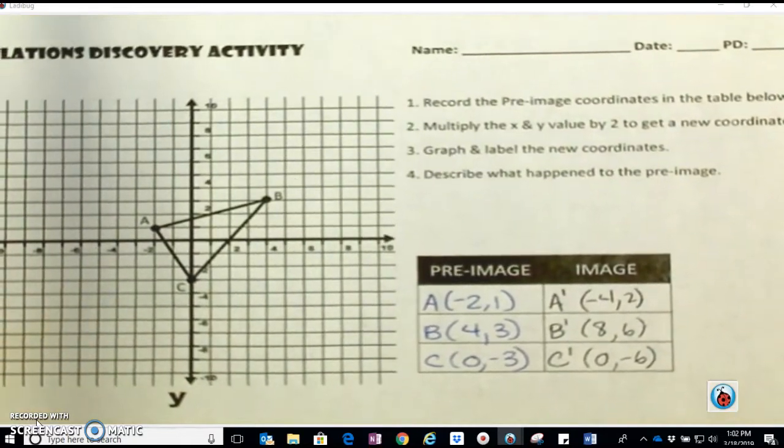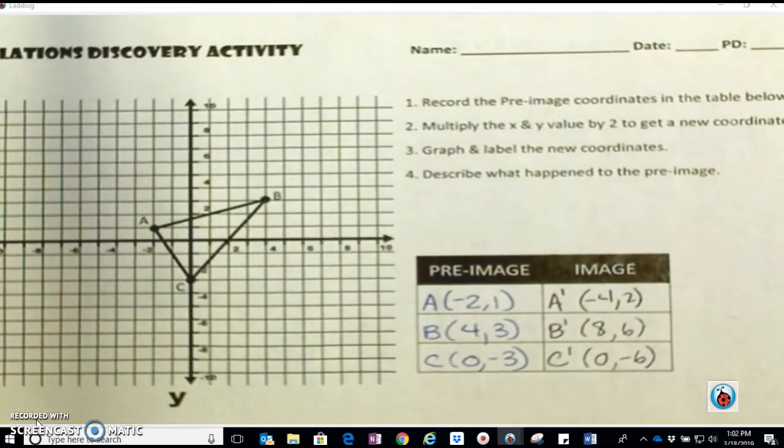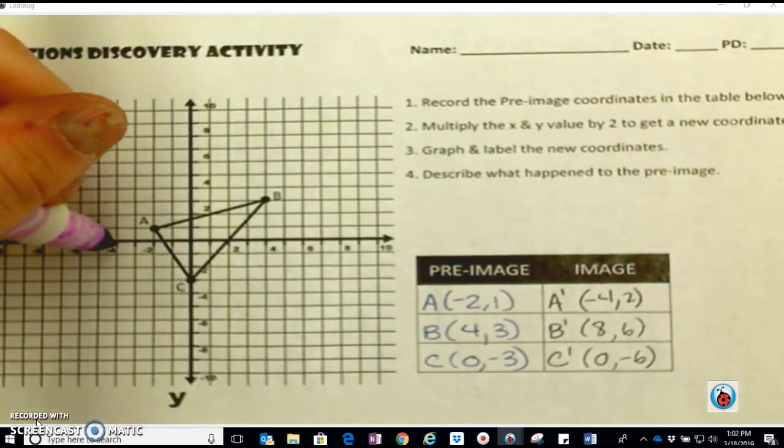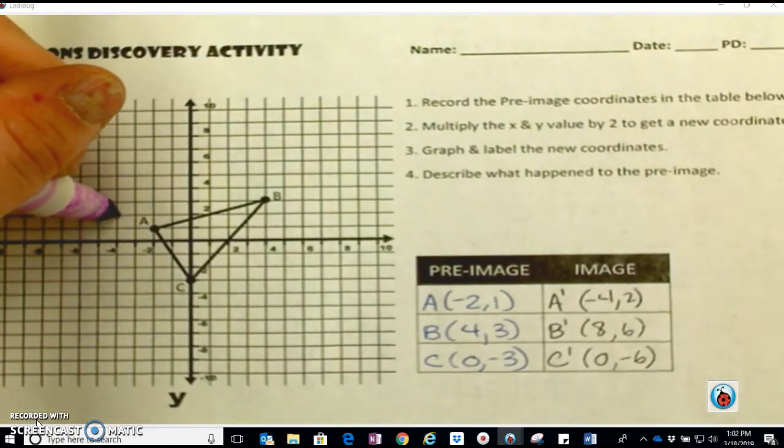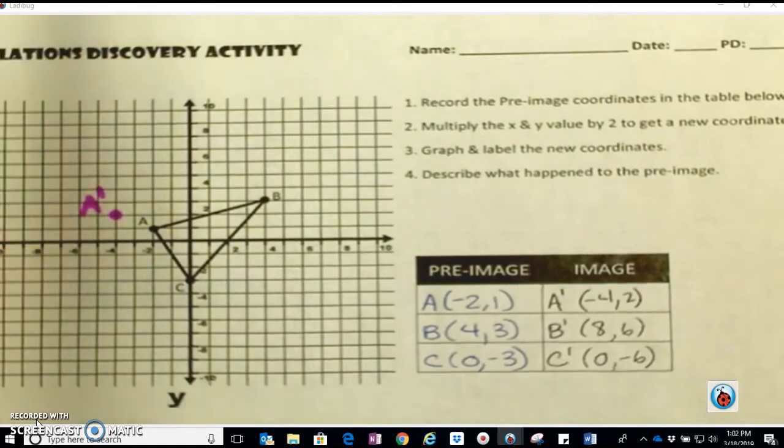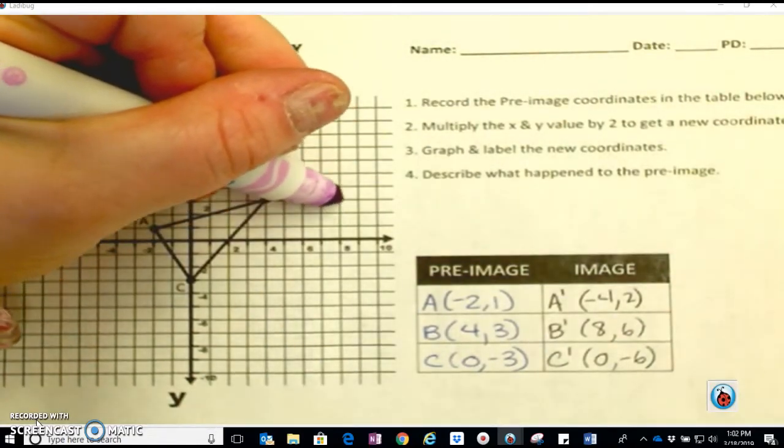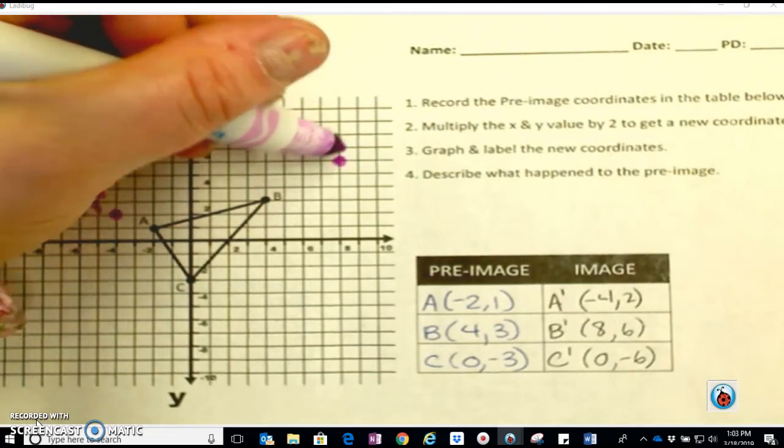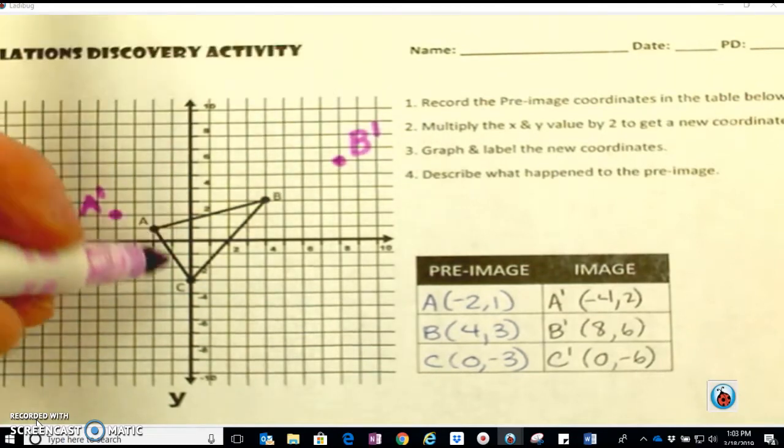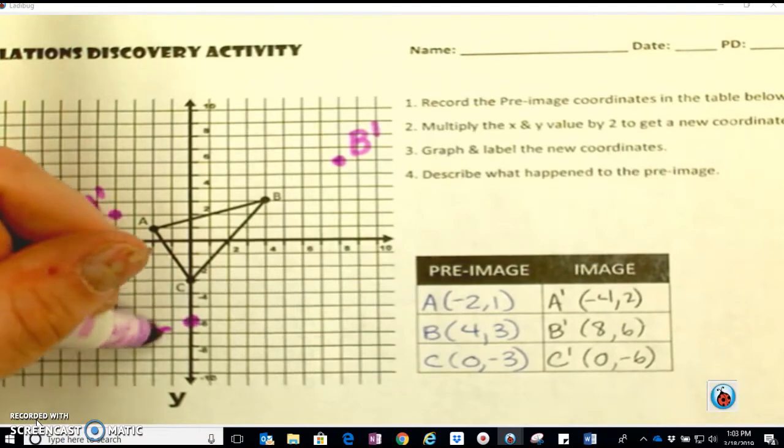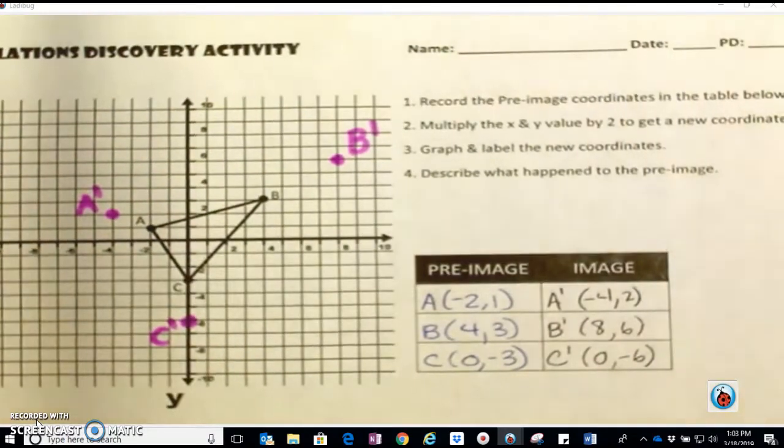Now I'm going to go ahead and graph those new points in a different color. I have negative 4, 2, that is A prime. Then I have 8, 6. That's B prime. And 0, negative 6 will be down here for C prime.